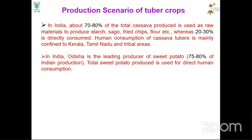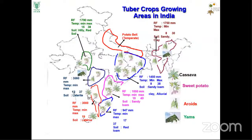Whatever sweet potato is produced is directly consumed — there is no single product made from sweet potato in the Indian market except some starch. This is the tuber crop growing area. In Odisha, sandy loam soil supports major cultivation of sweet potato and some cassava. South India also has significant tuber crop cultivation. In Maharashtra, the Konkan region cultivates cassava varieties and some sweet potato. Gujarat, Madhya Pradesh, and the Northeast also cultivate sweet potato and cassava.